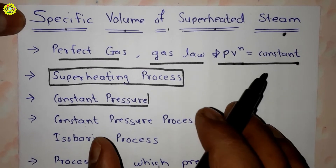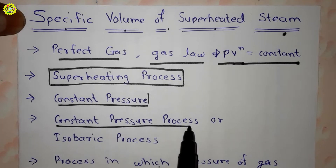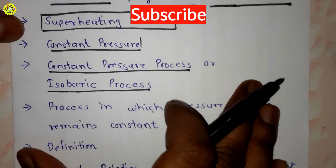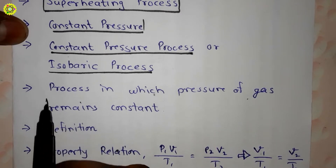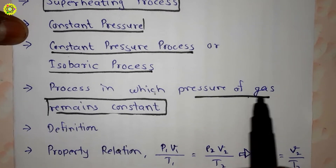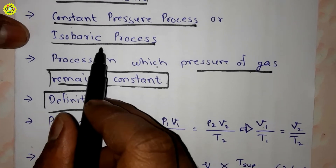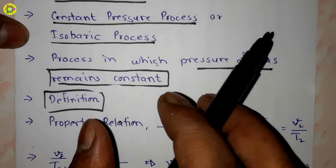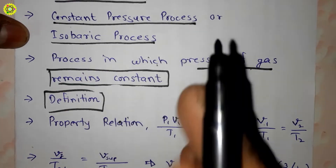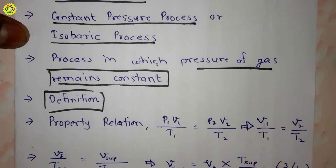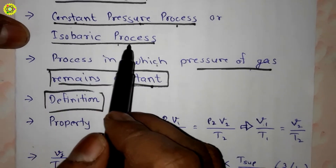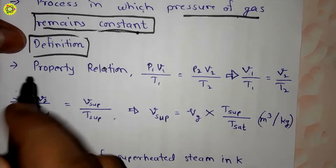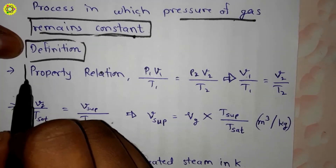Since the superheating process is carried out at constant pressure, it is also called a constant pressure process or isobaric process. An isobaric process is one in which the pressure of the gas remains constant. The definition is: if any system of gas undergoes a process such that during the process the pressure remains constant, then such a process is called a constant pressure process or isobaric process.